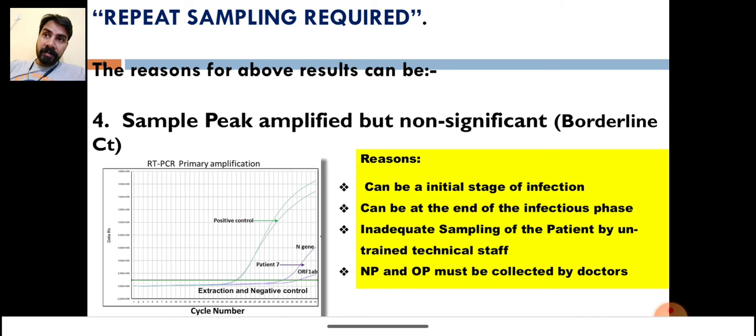On the basis of the papers, the sample will be declared as negative. But it might be possible the sample collection was not proper and we will not get the proper viral number to amplify. If the technician has collected a right sample, it can be initial stage of infection or at the end stage of infection.